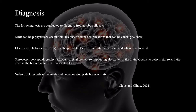The following tests are conducted to diagnose frontal lobe epilepsy. MRI can help physicians see tumors, lesions, or other complications that may be causing seizures. Electroencephalography (EEG) can help detect seizure activity in the brain and where it is located. Stereoelectroencephalography (SEEG) is a surgical procedure implanting electrodes in the brain; the goal is to detect seizure activity deep in the brain that an EEG may not detect. Video EEG records movements and behavior alongside brain activity.